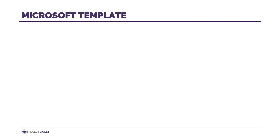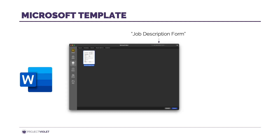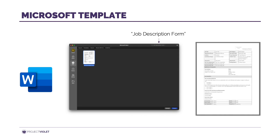Let's pull up Microsoft Word. You don't need to start from scratch — Word actually has a decent template. Create new from template, type "job description form" in the search area, and there you go. You've got a template you can start using right away.